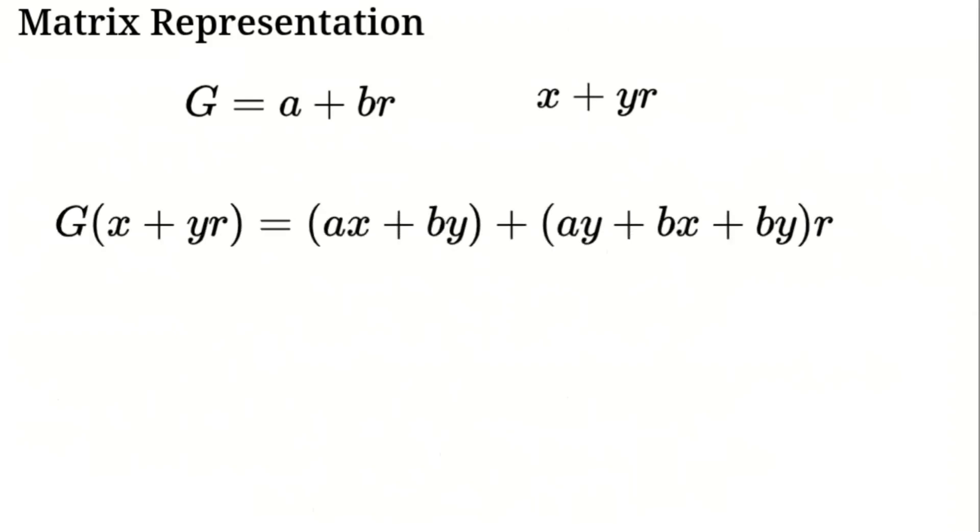Matrix representation and transformations. Now let's see golden numbers as matrices. For G equals A plus BR, it acts on X plus YR. Compute A plus BR times X plus YR is AX plus AYR plus BXR plus BYR squared. Since R squared is R plus 1, BYR squared is BYR plus BY. So we get AX plus BY plus AY plus BX plus BYR.